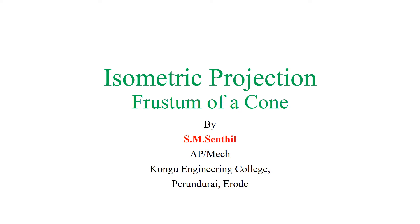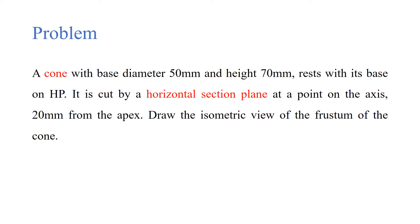Welcome to today's session on isometric projection of a frustum of a cone. The problem given is: a cone with base diameter 50 mm and height 70 mm rests with its base on HP. It is cut by a horizontal section plane at a point on the axis 20 mm from the apex. Draw the isometric view of the frustum of the cone.